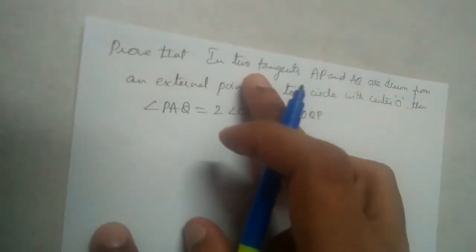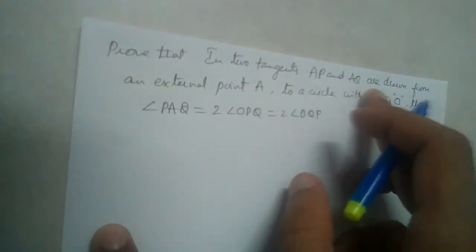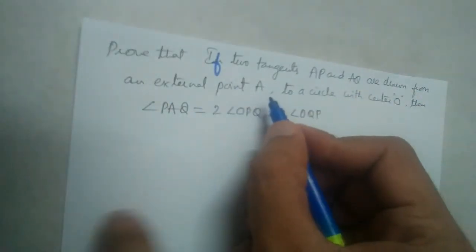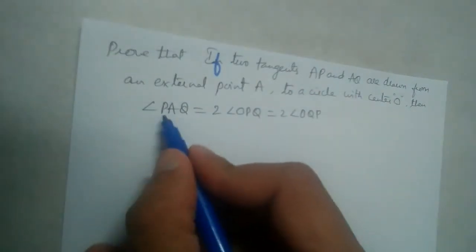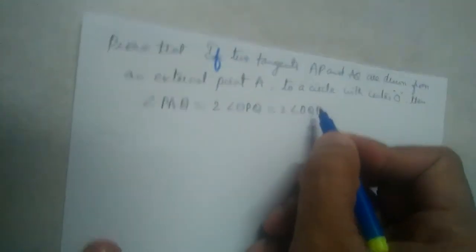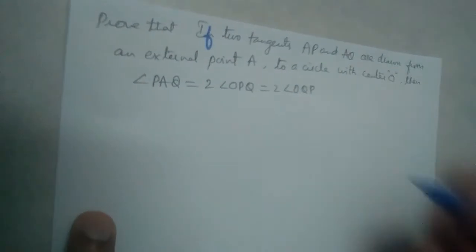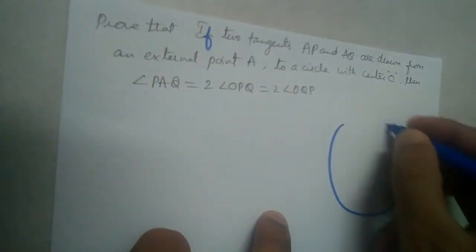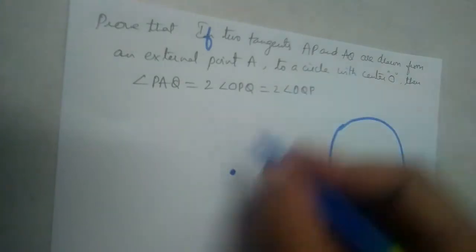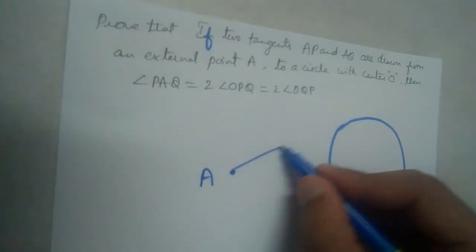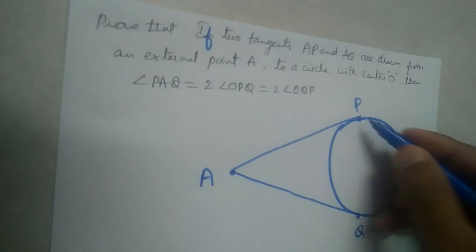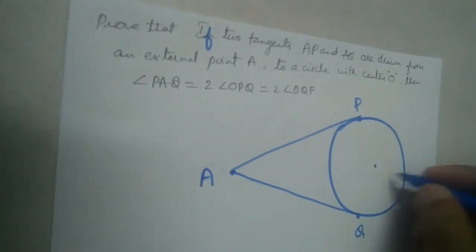We need to prove that if two tangents AP and AQ are drawn from an external point A to a circle with center O, then angle PAQ is equal to two times angle OPQ, which is also equal to two times angle OQP. Let us draw the diagram: we have a circle, and from external point A we draw two tangents AP and AQ, where P and Q are the points of contact.